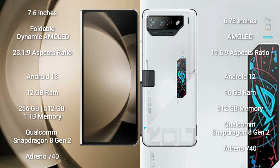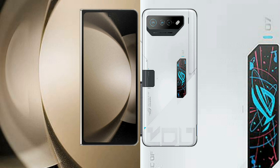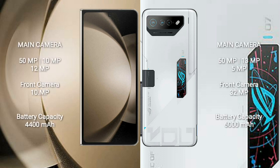The Asus ROG Phone 7 Ultimate comes with 16GB RAM and 512GB of internal storage. It is also powered by the Qualcomm Snapdragon 8 Gen 2 processor and Adreno 740 GPU.